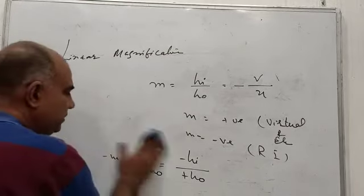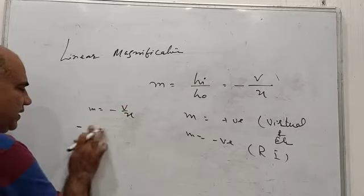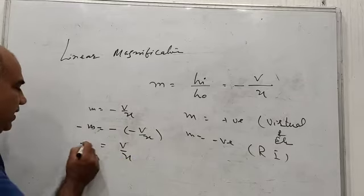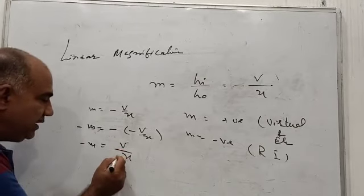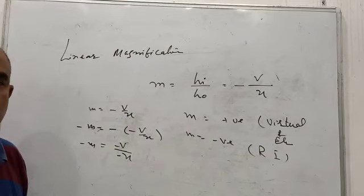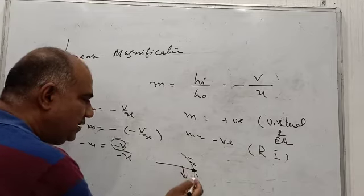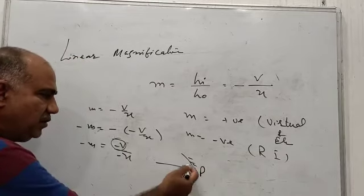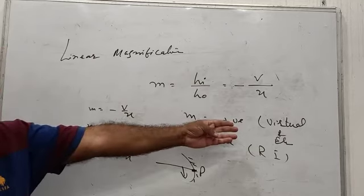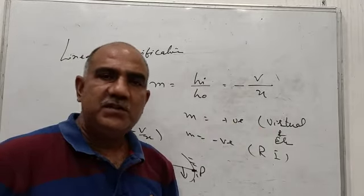Now let's analyze with M equals minus V upon U. If M is negative, that means minus V upon U is negative, so V upon U is positive. This fraction is positive even when U is negative, because U is always negative. So for V upon U to be positive when U is negative, V also has to be negative — since minus V upon minus U gives V upon U. V being negative means the image is formed to the left of the pole, in front of the mirror, so the image is real and inverted. You can similarly analyze yourself that when magnification is positive, the image has to be virtual and erect. That's all about magnification.